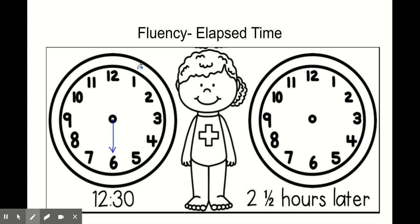We know it's pointing at the 6 because we count by 5 starting at 12. 5, 10, 15, 20, 25, 30. That's where I get my 30.